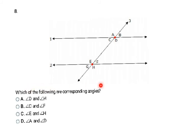Which of the following are corresponding angles? They must be in corresponding places on different intersections. The four pairs are A and E, B and F, C and G, and D and H. Looking at answer choice A — D and H are both to the right and down from their respective intersections, so they are in corresponding places. The answer is A: D and H.